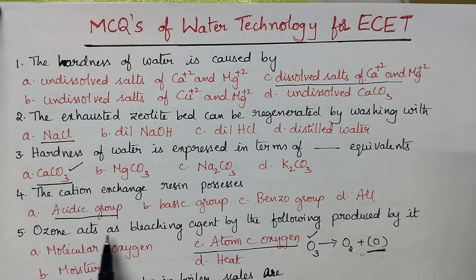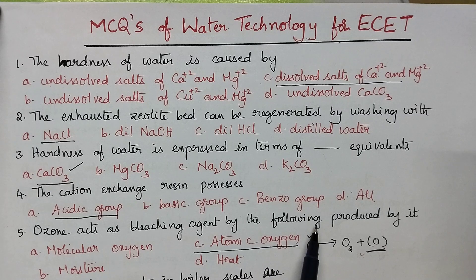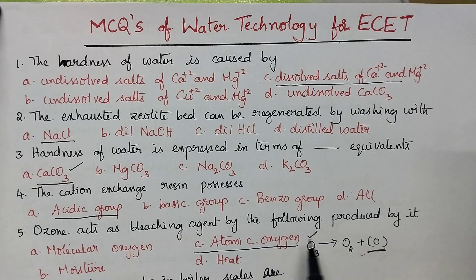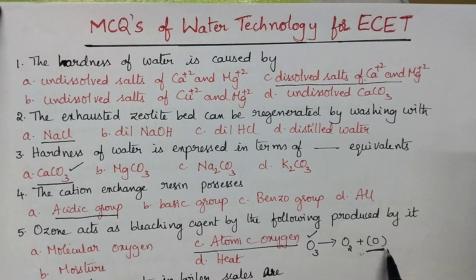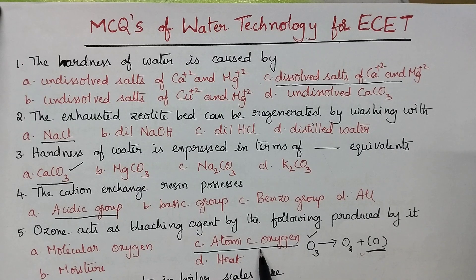Ozone acts as a bleaching agent due to the nascent oxygen it produces. Whenever ozone dissociates, it produces oxygen with the liberation of nascent oxygen. Nascent oxygen acts as the bleaching agent — it is also known as atomic oxygen.